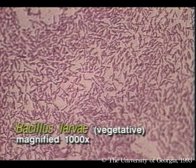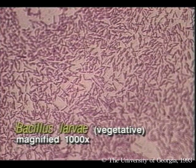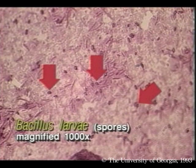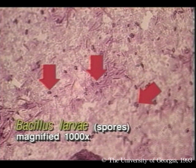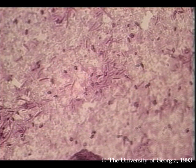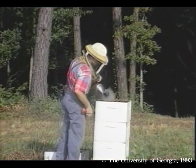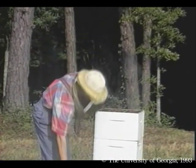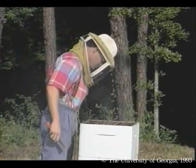American foulbrood, or AFB, is the most serious disease to infect any honeybee colony. It is caused by the bacterium Bacillus larvae, which forms infective spores that persist in honey and equipment for at least 35 years. The disease spreads when spores are transported on drifting bees, hive parts, clothing, hive tools, or contaminated honey. Every beekeeper should learn to identify AFB symptoms.